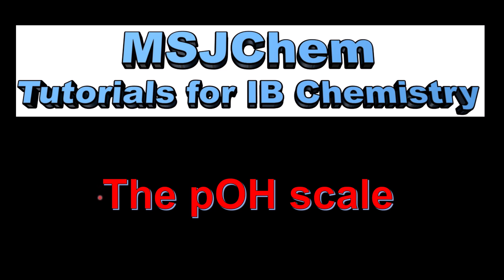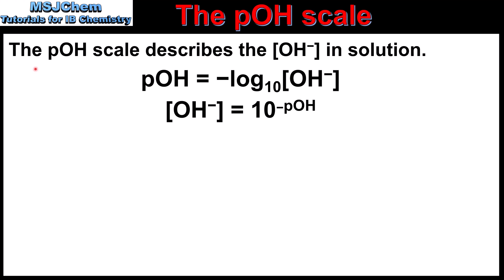This is MSJChem. In this video, I'll be looking at the POH scale. The POH scale describes the concentration of hydroxide ions in solution. Here we can see the equation used to calculate the POH value of a solution: POH is equal to the negative log of the hydroxide ion concentration of the solution.